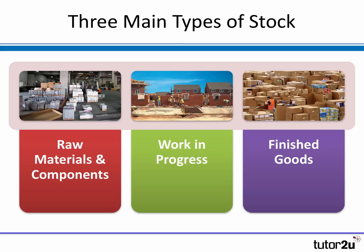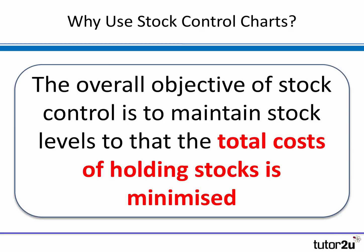Let's have a look at how they work. Firstly, let's think about why you might use a stock control chart. We already know that it's important for a business to manage the amount of stock it holds, partly because holding stock has costs — the cost of storing it, managing it, securing it, and of course the potential cost of the stock becoming obsolete. So the overall objective of stock control is to maintain stock so that the total costs of holding stock are minimised. And that's why stock control charts come into play.